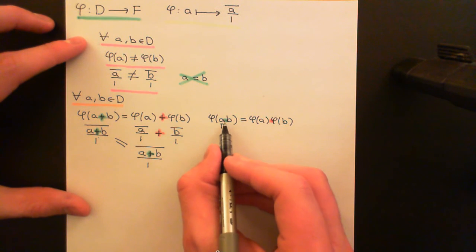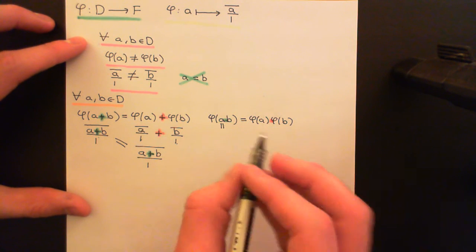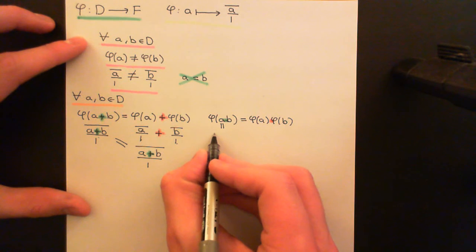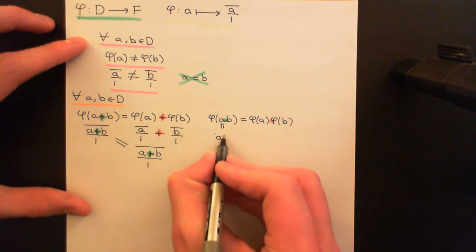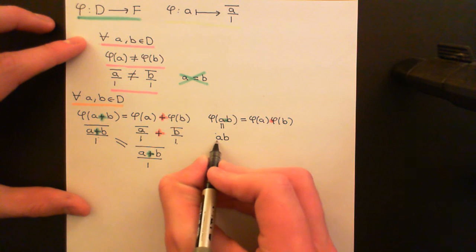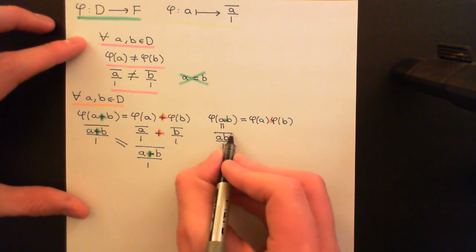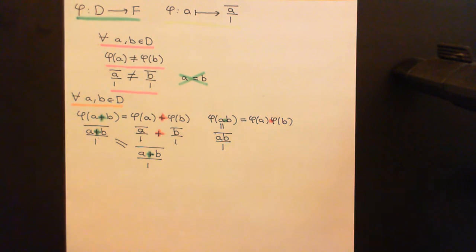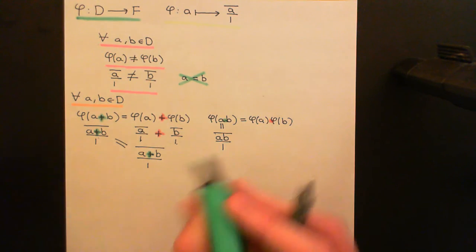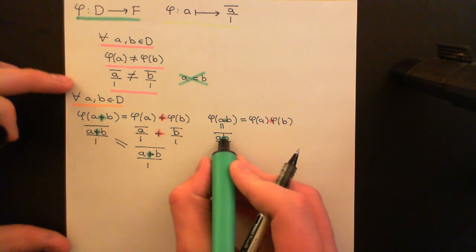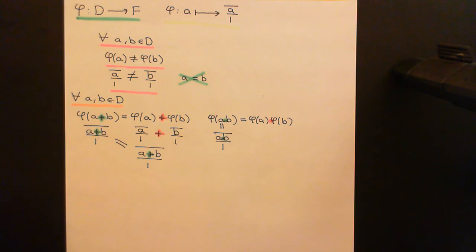So what will φ(A · B) be equal to? That'll just be the equivalence class of fractions containing the fraction (A · B) over 1, where again that multiplication is in the integral domain.